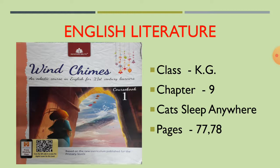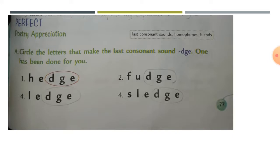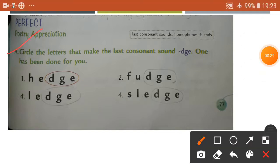Good morning children. Today we are going to study English Literature, Wing Chimes chapter 9, Cat Sleep Anywhere, pages 77-78. Your classwork: open page 77. Circle the letters that make the last consonant sound DGE. One has been done for you.